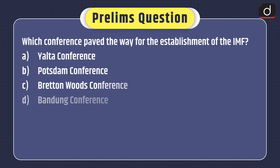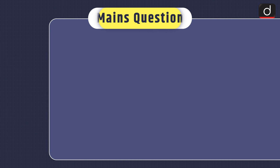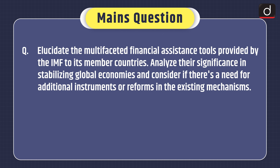Now it's time for practice questions. A prelims-based question: Which conference paved the way for the establishment of the IMF? — Yalta Conference, Potsdam Conference, Bretton Woods Conference, or Bandung Conference? You can send the answer in the comment section. And a mains question: Elucidate the multifaceted financial assistance tools provided by the IMF to its member countries. Analyze their significance in stabilizing global economies, and consider if there is a need for additional instruments or reforms in the existing mechanisms. So that's all for today — stay tuned for the next episode. Thanks for watching.